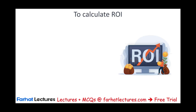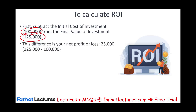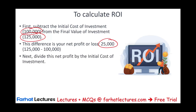Let's officially calculate ROI. You take the final value and subtract the initial investment. Assume you contributed $100,000 and your final investment value is $125,000. The difference is $25,000, meaning your investment grew by $25,000. You divide $25,000 by the initial investment of $100,000, which equals 0.25, or 25%. That's your ROI.